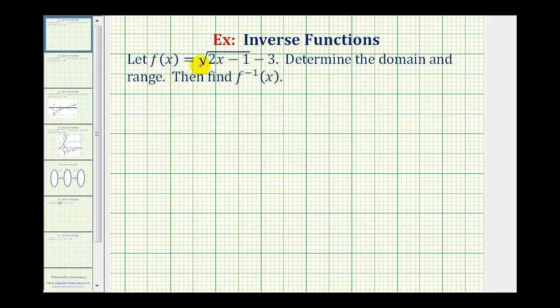We're given f of x equals the square root of the quantity two x minus one, minus three. We want to determine the domain and range of the given function and then find the inverse function.